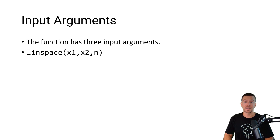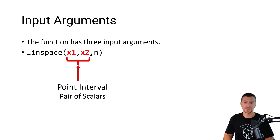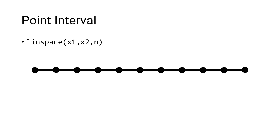The function has three input arguments. x1 and x2 are the point interval specified as a pair of scalars, and n is the number of points specified as a real numeric scalar with a default value of 100. The LINSPACE function generates a row vector of equally spaced values between x1 and x2, where x1 and x2 are the endpoints.